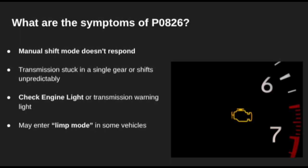So what might you notice? Manual mode may stop working completely — pushing the lever up or down won't shift the gears. Some vehicles may stay stuck in one gear or shift erratically. You'll usually see the check engine light, and in some cases the car may go into limp mode to protect the transmission.